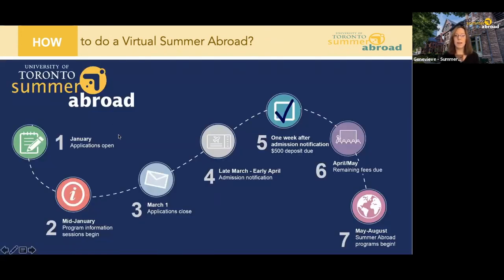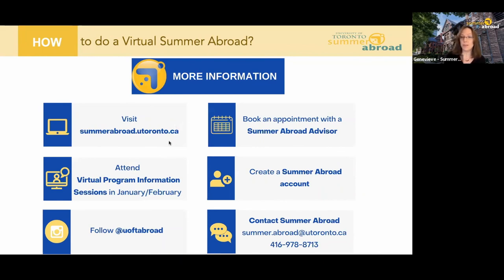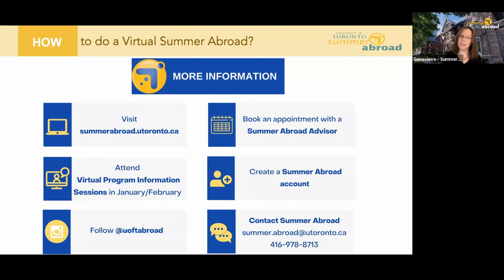Just a brief timeline of what to expect: we're already in February doing information sessions. March 1st is the application deadline. Late March, early April, you'll hear from us if you got in. There's a $500 deposit due a week after that, and then remaining fees due in April and May. That's about it for the presentation of the virtual Summer Abroad program in England. In terms of how an applicant can stand out for selection: really make sure that you're making a case in your personal statement for how the course fits into your academic and personal goals. You don't have to have a lot of experience within the course subject area, but just show that you have a genuine interest in the course material and the location, and pay close attention to your personal statement.